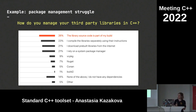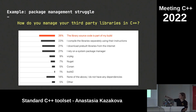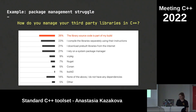The package management struggle in C++: from our 2021 Developer Ecosystem survey, when we asked how developers manage third-party libraries, about one-fourth just have the library source code as part of their build. Most people rely on the system package manager, download pre-built libraries, or compile libraries through their instructions. Package managers like vcpkg and Conan are used by a smaller portion.